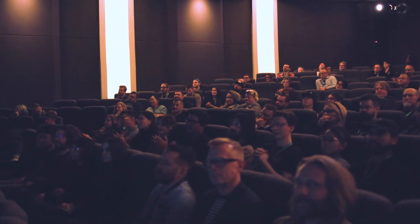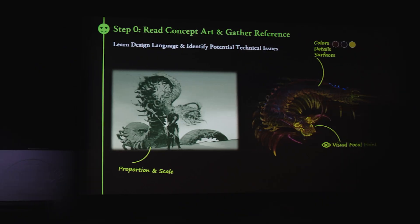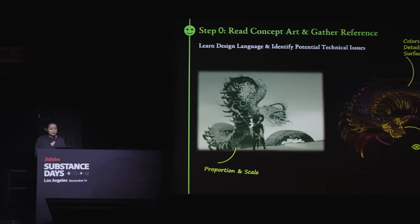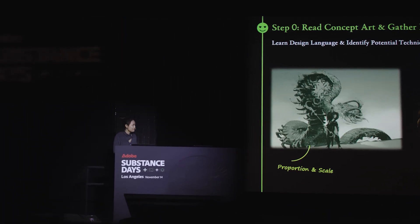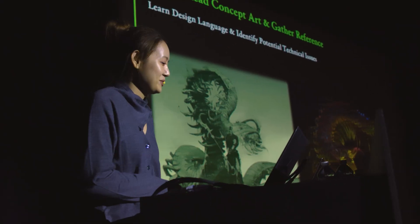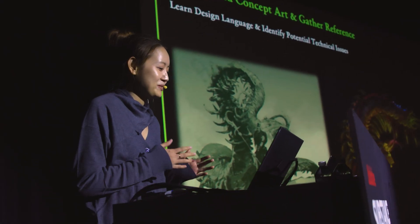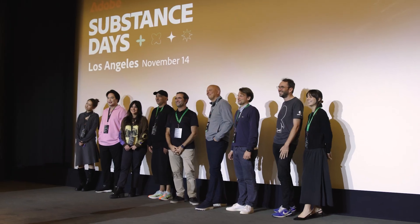is a bunch of the features in Substance 3D Painter — like the smart materials, the smart masks, the anchors, the customized brushes, and the passports. They all work together to help boost efficiency while creating textures. And it will also help a lot for collaborations on teams and across teams.